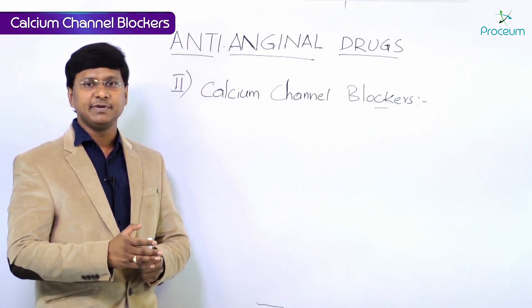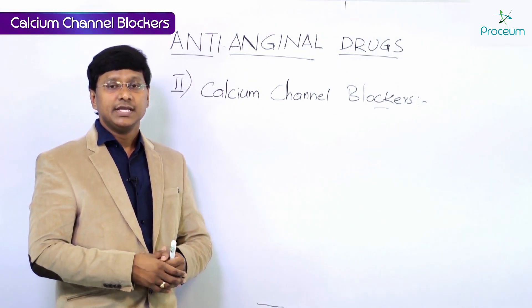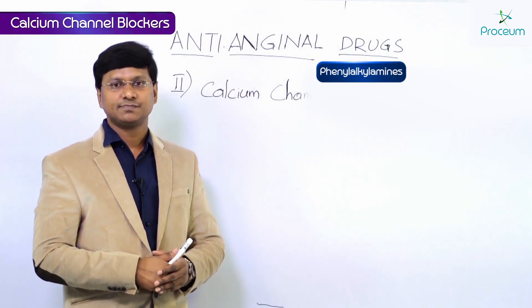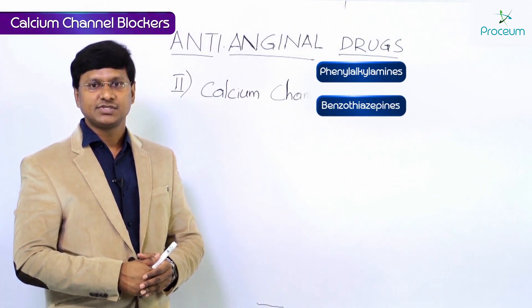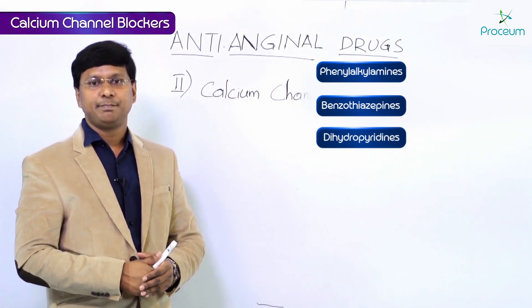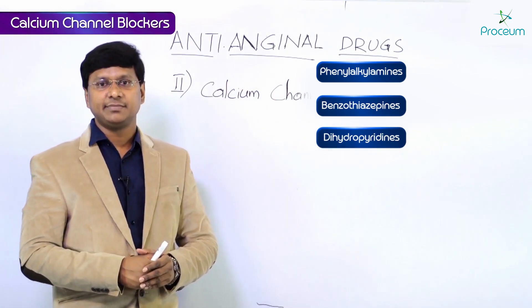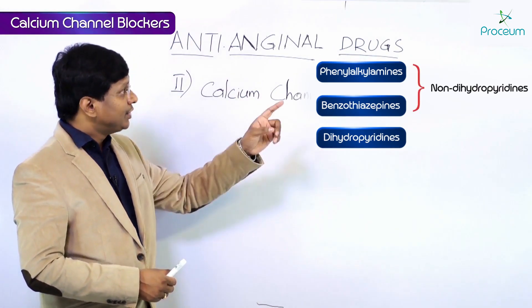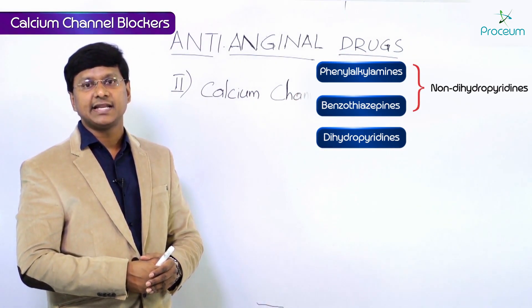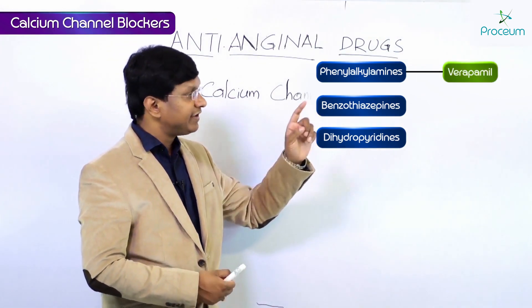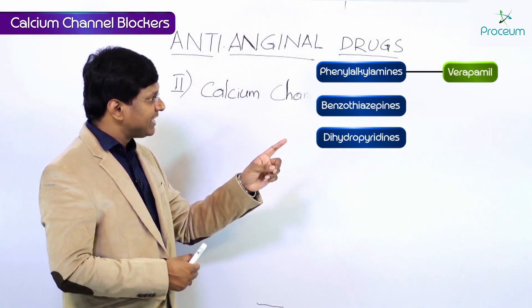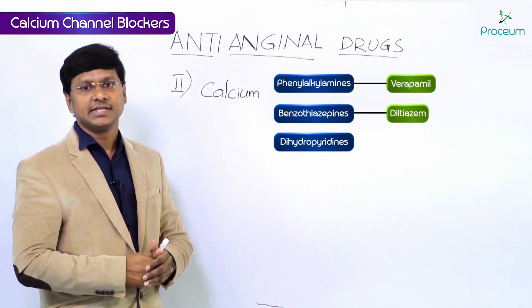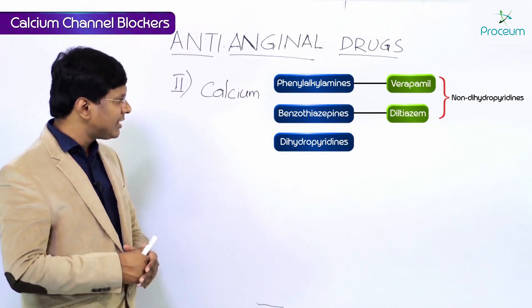Let me give you the list of calcium channel blockers. They are mainly classified into three types: number one, the phenyl alkyl amines; number two, benzothiazepines; number three, dihydropyridines. The phenyl alkyl amines and benzothiazepines are called non-dihydropyridines. Under phenyl alkyl amines we have verapamil, and under benzothiazepines we have diltiazem. So verapamil and diltiazem are non-dihydropyridines.